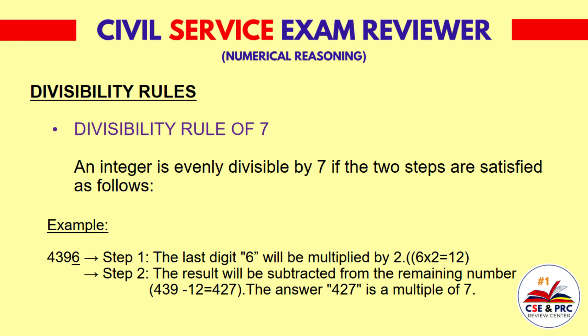Divisibility Rule of 7: An integer is evenly divisible by 7 if two steps are satisfied. Example: Consider the number 4,396. Step 1: The last digit 6 will be multiplied by 2. 6 times 2 equals 12. Step 2: The result will be subtracted from the remaining number. 439 minus 12 equals 427. The answer 427 is a multiple of 7.